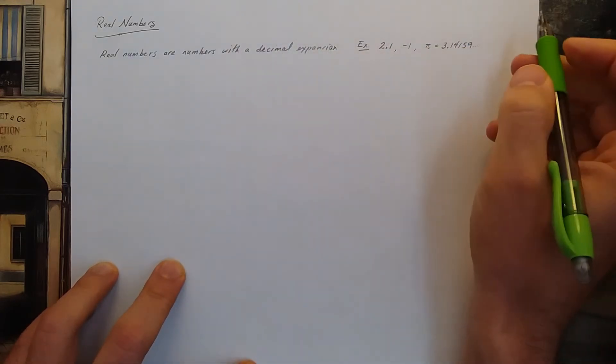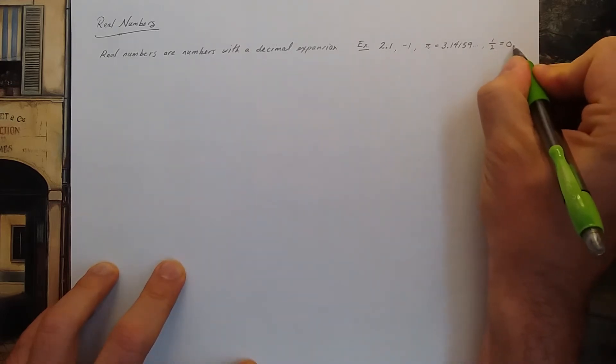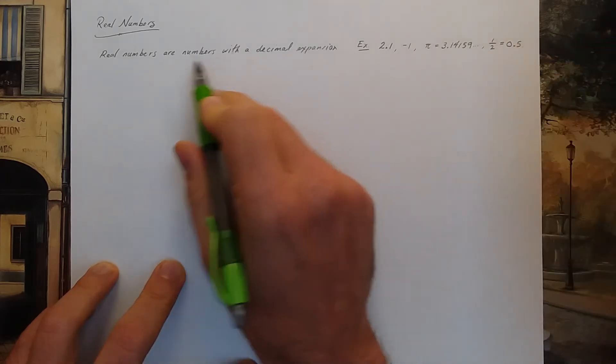Even fractions, such as one half, you can write in decimal form, and so they are real numbers.